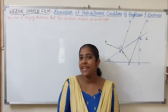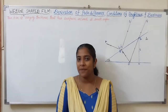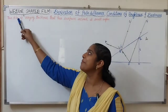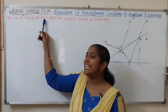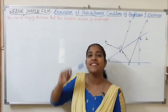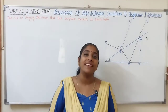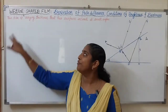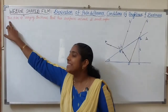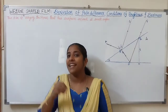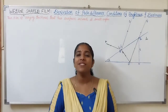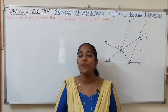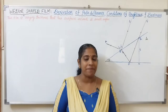What is meant by a wedge shape film? A wedge shape film is a thin film of varying thickness that has surfaces inclined at small angles. For a film to be thin, the condition is that the thickness of the film must be of the order of one wavelength of light.